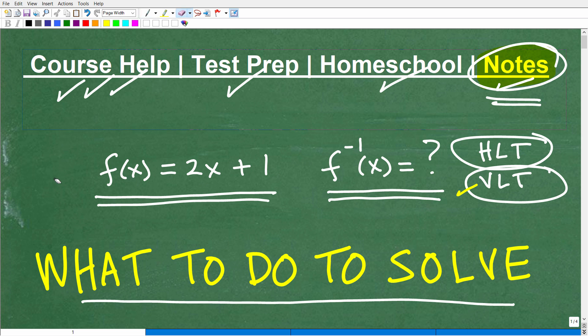So the HLT is a test that indicates whether that function, in fact, has an inverse function. So a graph has to pass both the VLT to be a function and the HLT in order to have an inverse function. So let's talk about like a line. So an equation of a line, does that pass the vertical line test? Yes. And does it pass the horizontal line test? It does as well.